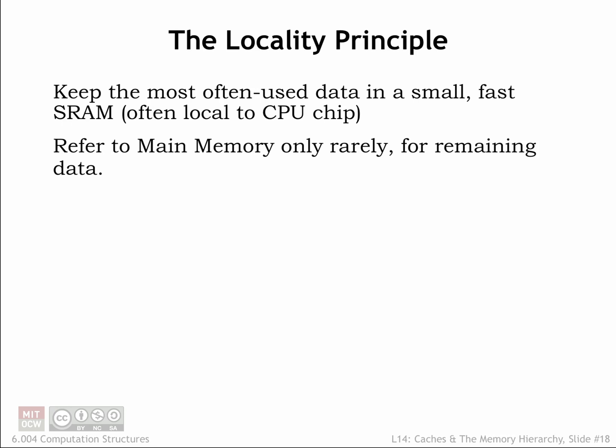How can the memory system arrange for the right data to be in the right place at the right time? Our goal is to have the frequently used data in some fast SRAM. That means the memory system will have to be able to predict which memory locations will be accessed. To keep the overhead of moving data into and out of SRAM manageable, we'd like to amortize the cost of the move over many accesses — we want any block of data we move into SRAM to be accessed many times. When not in SRAM, data would live in the larger, slower DRAM that serves as main memory.